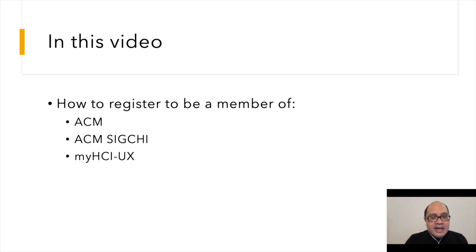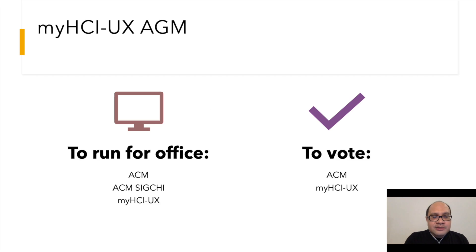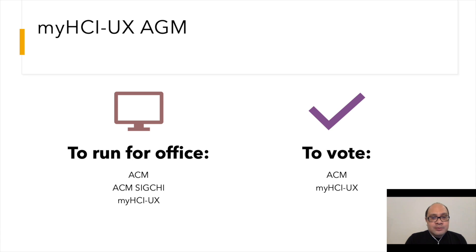To recap, in this video I have shown you how to register to be a member of ACM, ACM SIGCHI, and myHCIUX. In order to run for office in the AGM, you will need to be a member of ACM, ACM SIGCHI, and myHCIUX. In order to vote, you will need to be a member of ACM and myHCIUX.